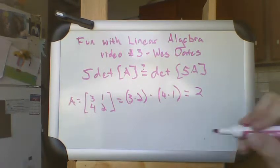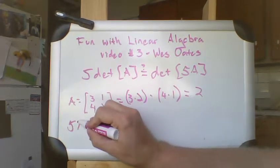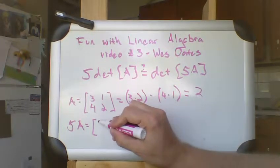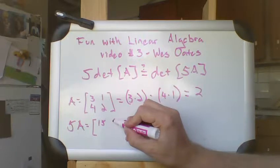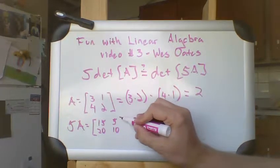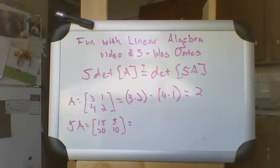And let's compare whether the determinant of 5 times A, which would be 15, 5, 20, 10, would be the same. Now, of course, if this or any other counterexample to the above statement can be shown not to be true, then we know that the statement itself is not true.